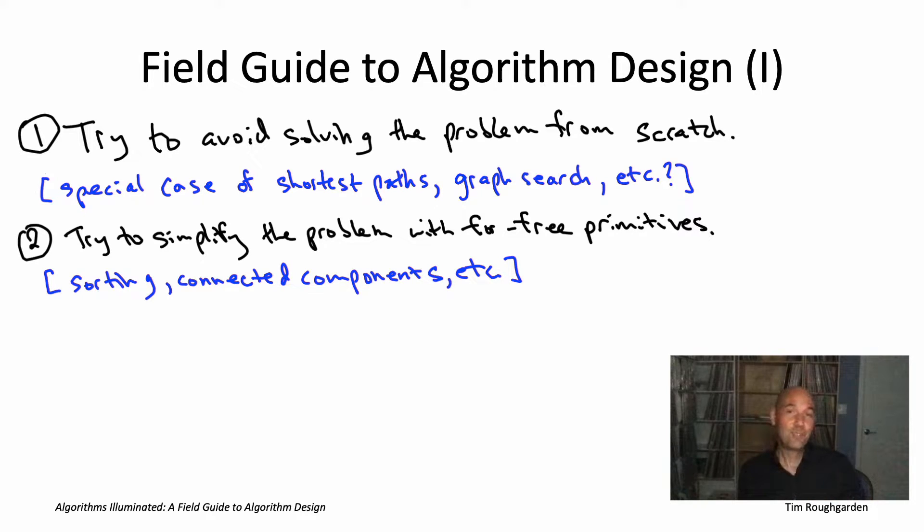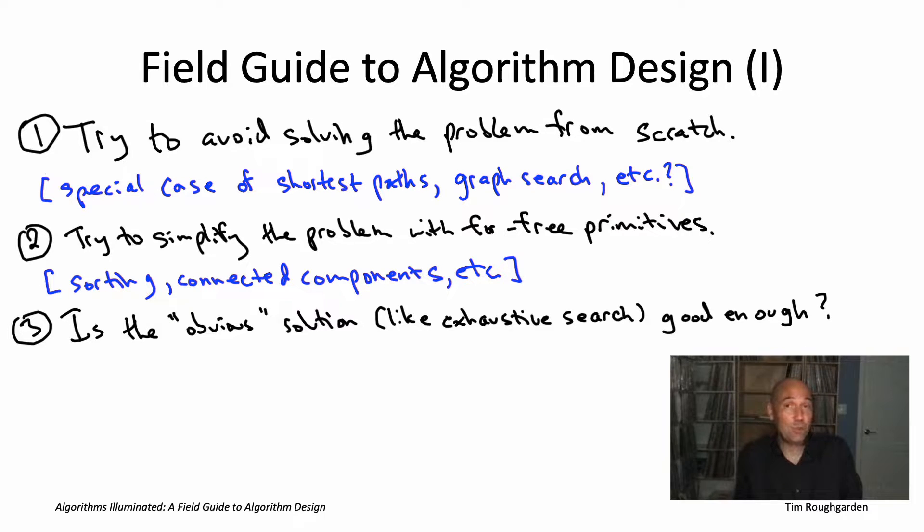The third step is to try to be lazy, to not work too hard coming up with an algorithm. So you first just want to identify what would be the totally obvious naive way to solve the problem. Maybe that would be something like exhaustive search. And then you want to just double-check, maybe this naive solution is already good enough. Like if you just need to solve the traveling salesman problem on a graph that has ten vertices, exhaustive search is going to be just fine. Or if you're counting the number of inversions in an array that only has length like a thousand, you can go ahead and use the quadratic time exhaustive search algorithm for counting inversions.